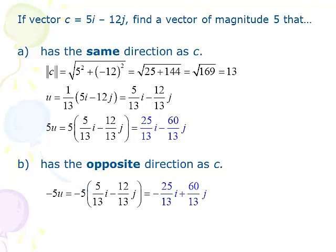If I want to find a vector of magnitude 5 in the opposite direction, I simply go negative 5 times the unit vector, ending up with negative 25/13 i plus 60/13 j. Same process — find the unit vector, then multiply by negative 5 instead of positive 5. These vectors have a magnitude of 5.